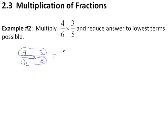So 4 times 3 makes 12, 6 times 5 makes 30. Now it's very important when you get to this stage to see if you can reduce these. Are they reducible? Absolutely they are.